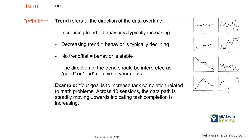Let's move on to trend. This is probably the most common one and the one you'll probably explain the most to stakeholders. Trend refers to the direction of the data over time. Increasing trend means behavior is typically increasing; decreasing means behavior is going down; no trend means behavior is stable. In baseline, we are often looking for that stable baseline. When we move to intervention, we want to see a trend one way or the other. The direction of the trend should be interpreted as good or bad relative to your goals - always remember, what's the goal?